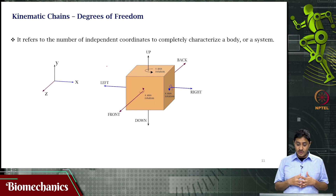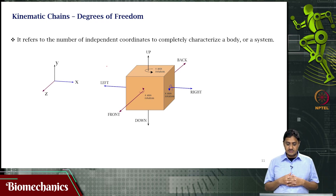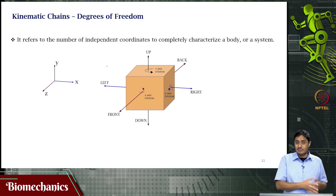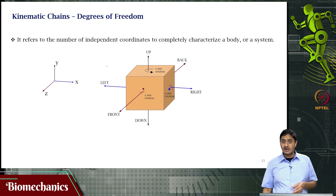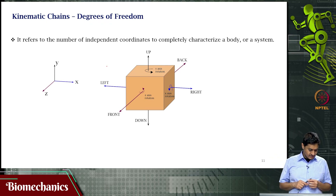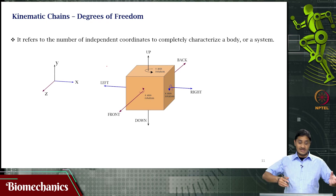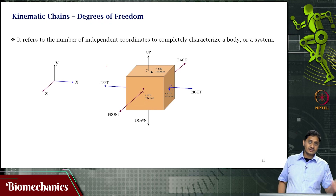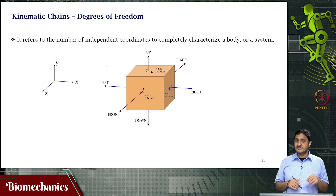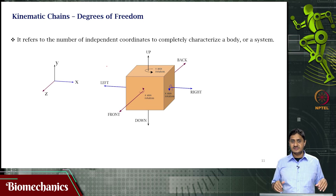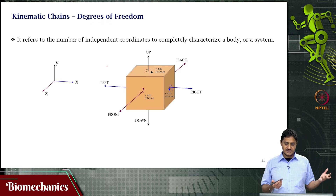The number of independent coordinates required to completely describe this body in space is 6, because it has no other constraint. You need 6 independent coordinates to describe this body in space. It can rotate in any of the 3 directions and translate in any of the 3 directions.